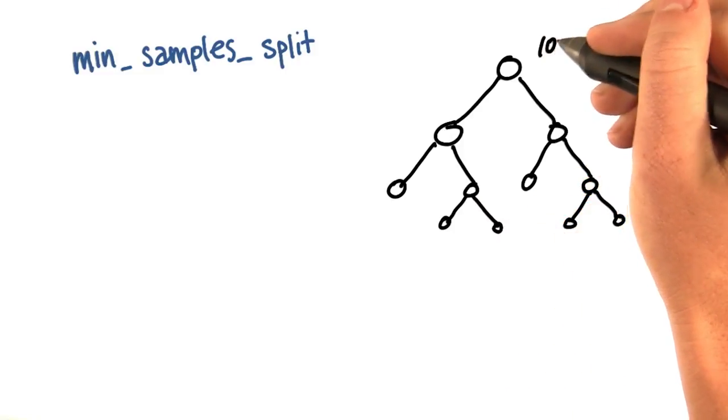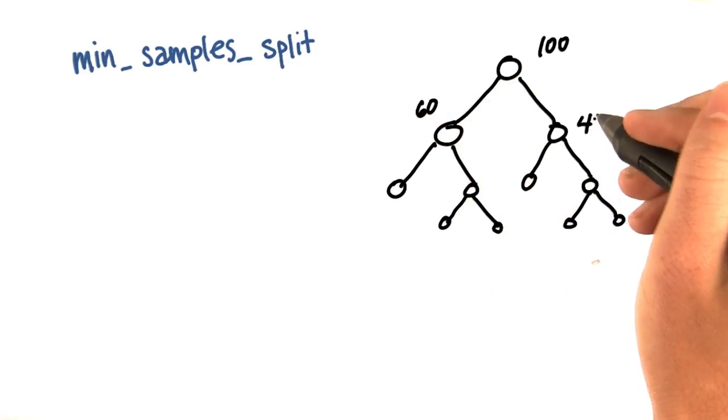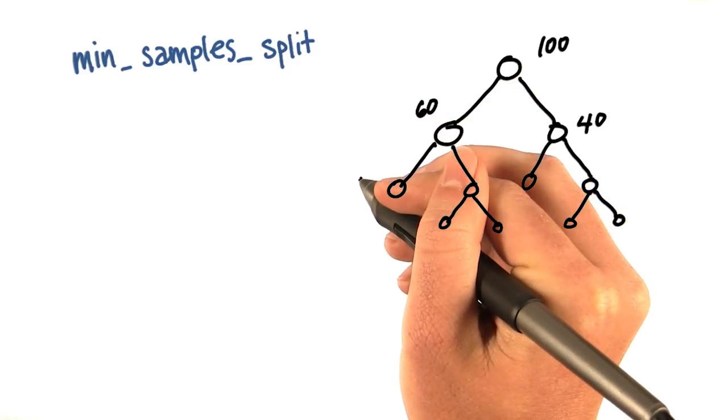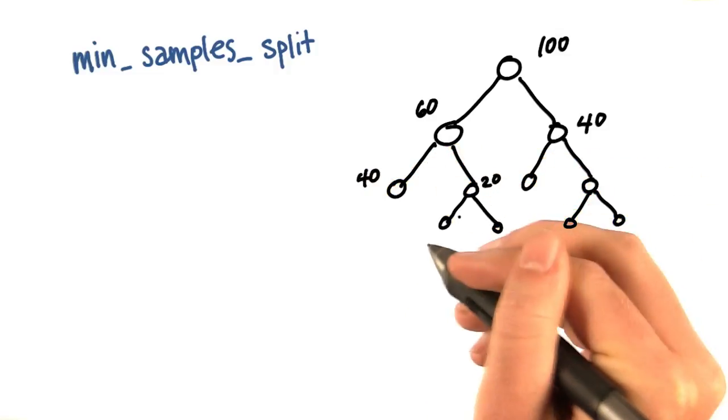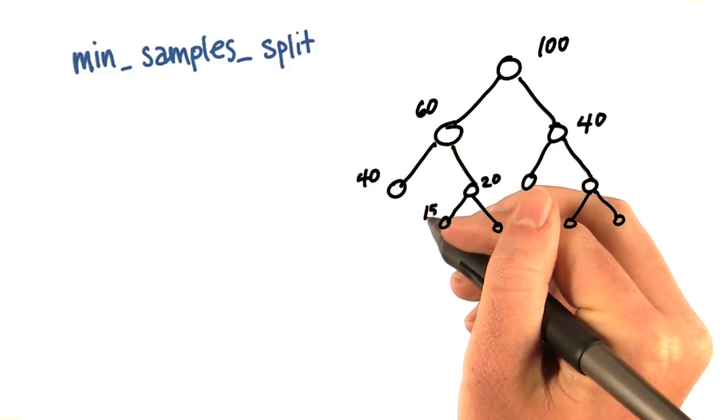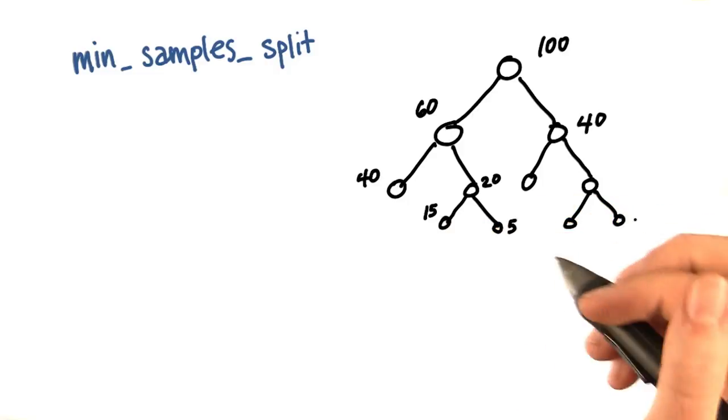So for example, if I start out with 100 examples here, then maybe I get 60 and 40. Then maybe I get 40 and 20, and then maybe this 20 turns into 15 and 5, and so on.